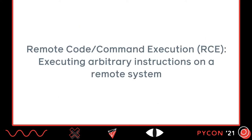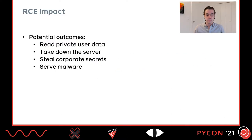Let's start with a definition. When we say remote code execution or remote command execution, what we're talking about is being able to execute arbitrary instructions on some remote system — a system that you don't already have access to. RCE is a game over kind of vulnerability. If you achieve RCE, you can do pretty much anything the server can do: read private user data, take down the server, steal corporate secrets, or have the server serve malware. It's the kind of vulnerability we need to prevent at all costs.